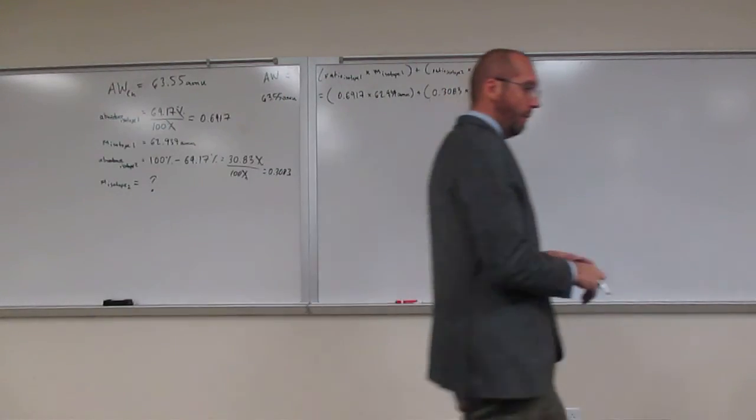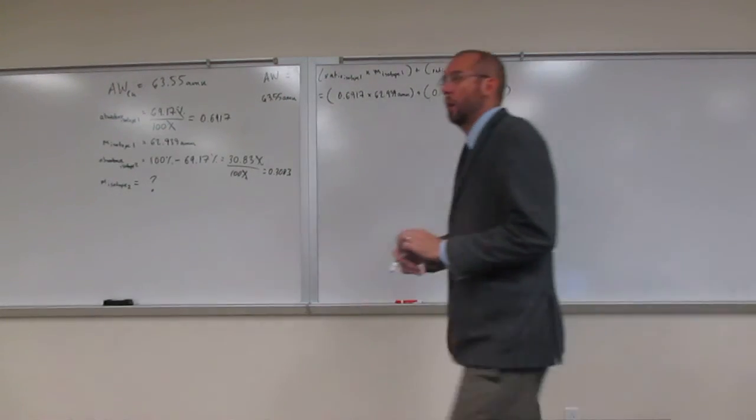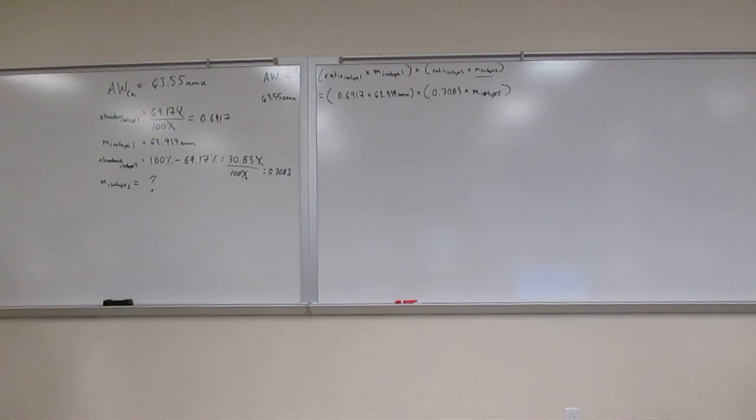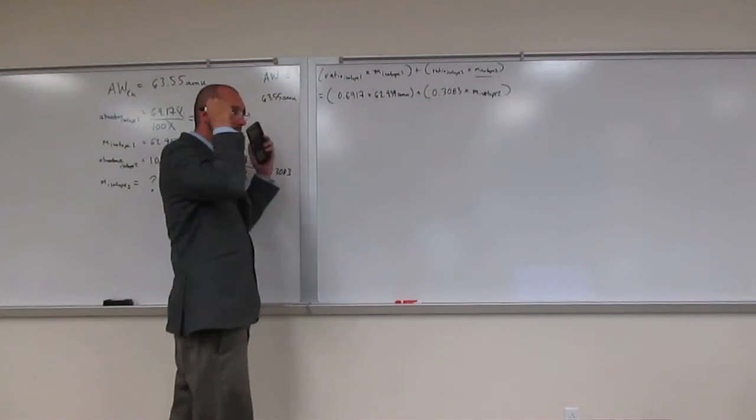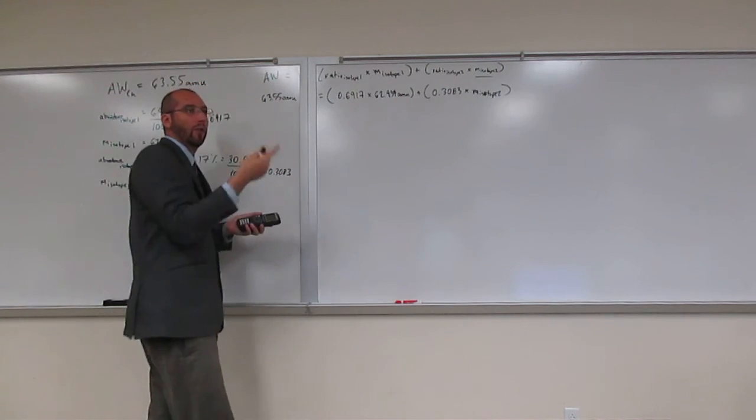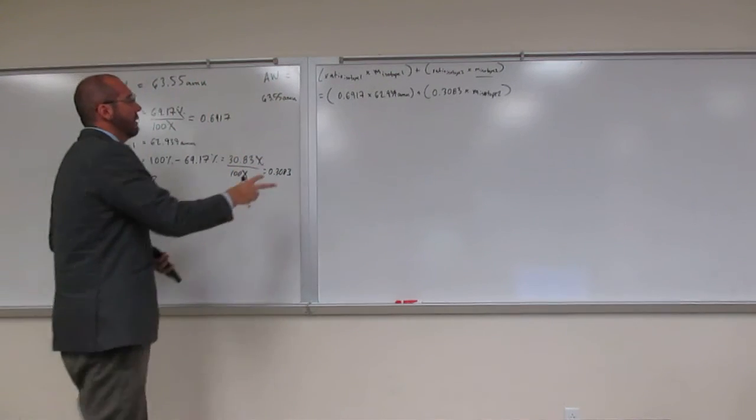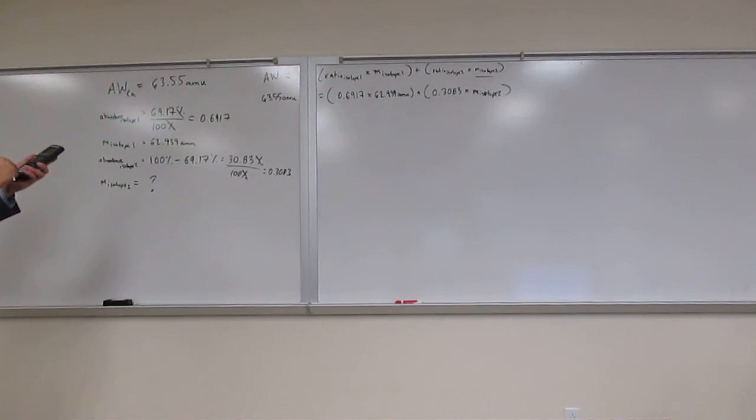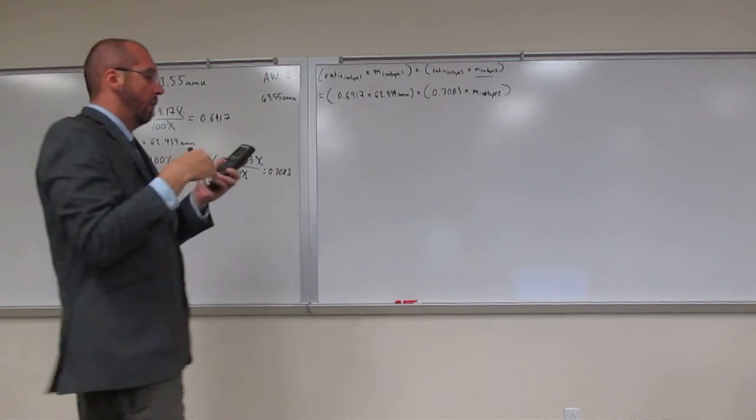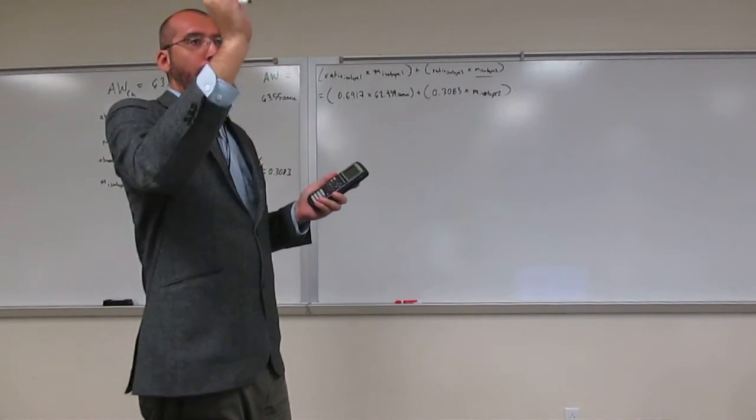So again, like I said, what I'm going to do for you guys today is just show how I would think about it if I were trying to figure this out. So the first thing I would do is multiply these two things together. So I get 0.6917 times 62.939, and I get 43.53 something.